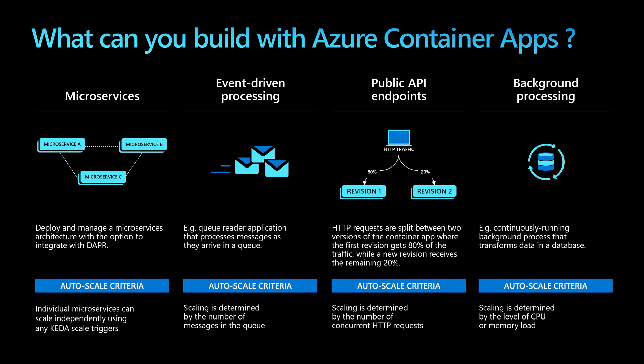Another type of application that could be run within container apps is background processing. For scenarios where we want to run continuously running background processes that will, for example, transform data in a database, we can do that within container apps, and we can scale in this case based on the metrics of CPU and memory.